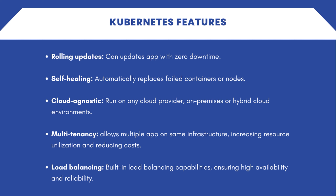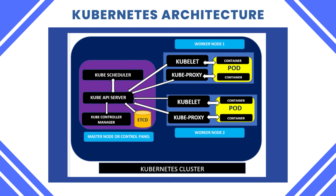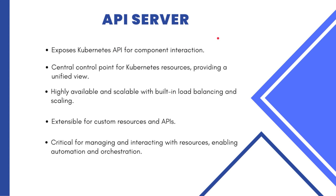Now let's look at the architecture of Kubernetes. Kubernetes consists of many components, mainly: kube-api-server, kube-scheduler, kube-controller-manager, etcd, kubelet, and kube-proxy. These are distributed across the master node or control plane and the worker nodes. The master node contains kube-api-server, kube-controller-manager, kube-scheduler, and etcd. On worker nodes, we have kubelet and kube-proxy. The workloads run on pods in the worker nodes, and each pod runs containers. All of these together create the cluster.